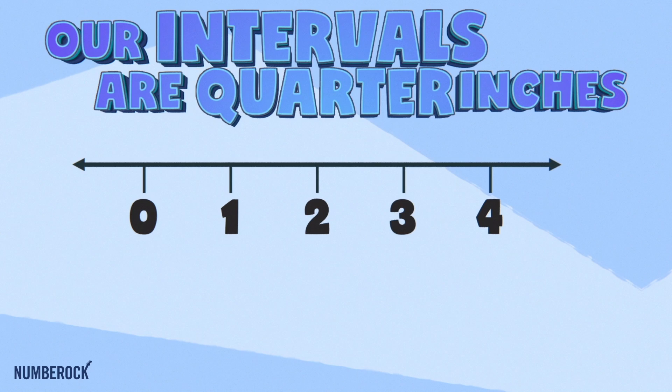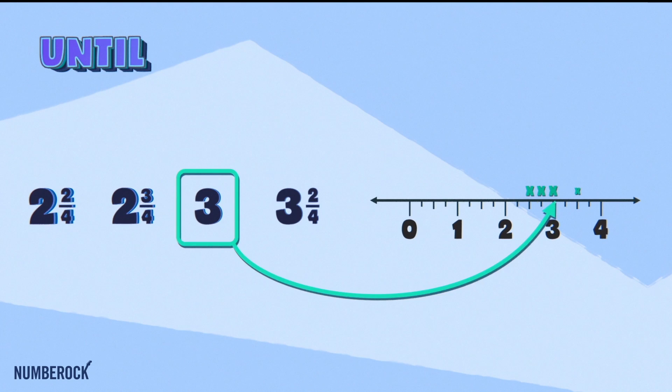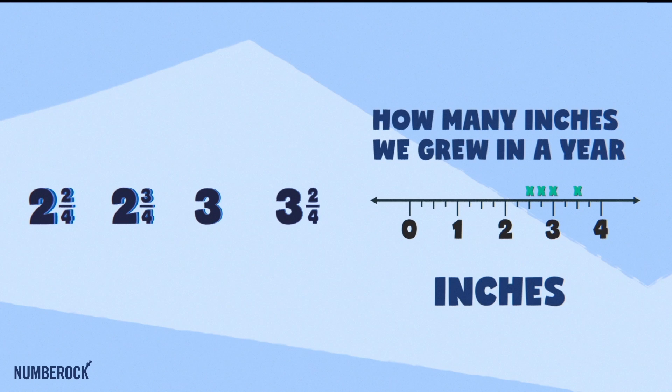From zero to four inches, we'll draw the line plot. Our interval's a quarter inch, each has given a spot. We'll block each data point and we won't stop until the unit's on the bottom and the title's on the top.